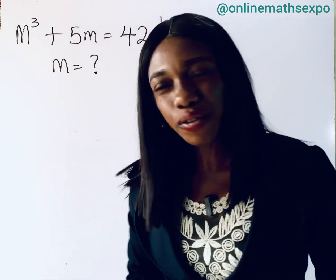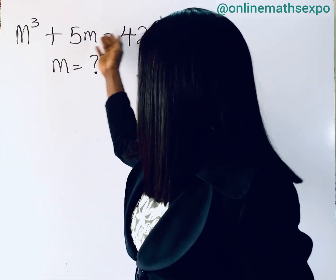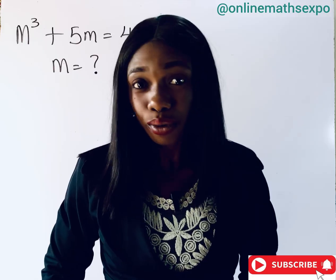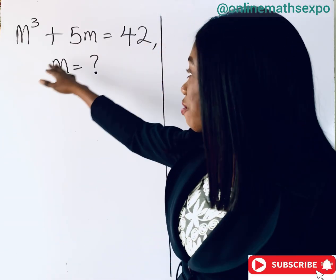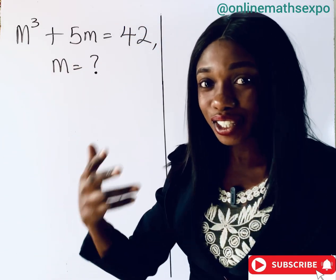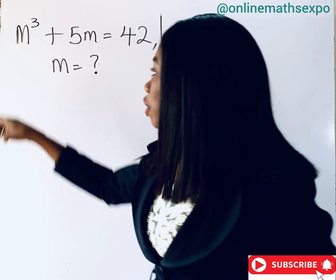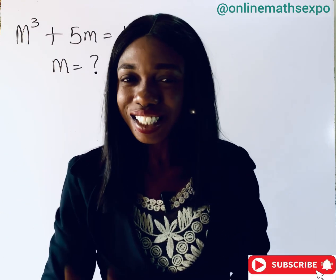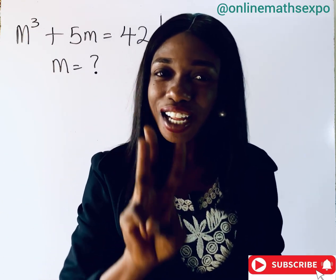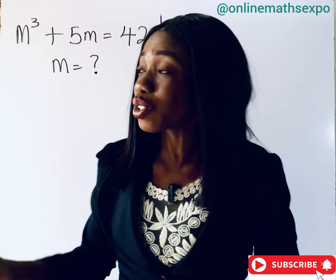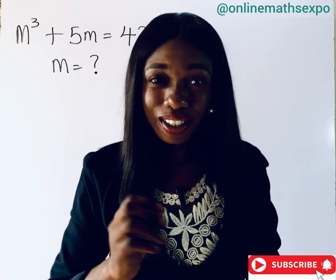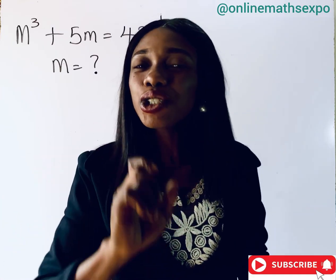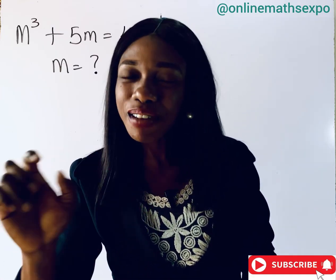Hello, amazing friends! Let's solve this Harvard entrance exam question together. It's very simple. What we have here is a cubic equation — it's cubic because the highest power of m is three, which means we're expected to have three values of m. There are a lot of approaches you can use, but I'm going to show you the simplest method.